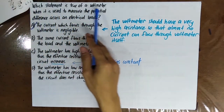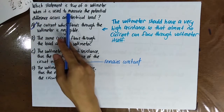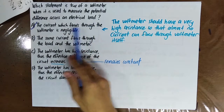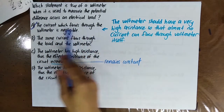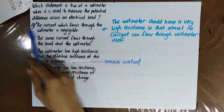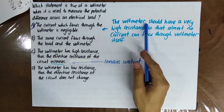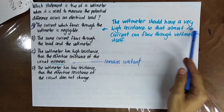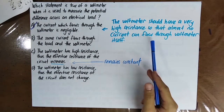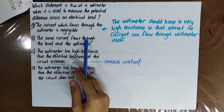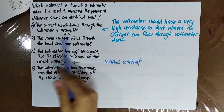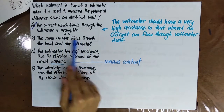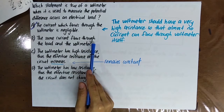Which statement is true of a voltmeter when it is used to measure the potential difference across an electrical load? 'The current which flows through the voltmeter is negligible' — yes, this is true, because the voltmeter should have a very high resistance so that almost no current can flow through the voltmeter itself. 'The same current flows through the load and the voltmeter' — no, most of the current should not pass through the voltmeter, so this is wrong.